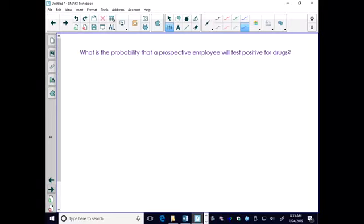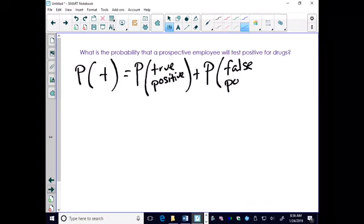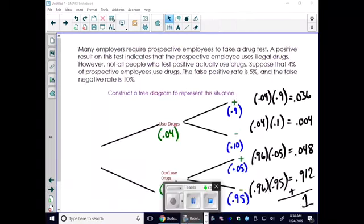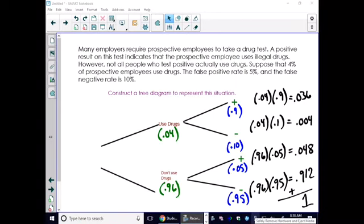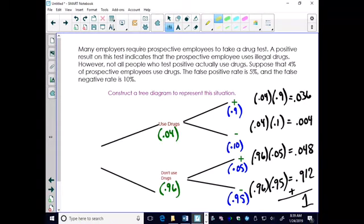Now let's look at a specific problem. What is the probability that a prospective employer will test positive for drugs? Now there's two ways this could happen. If you go back to your tree diagram, you'll see that you could have a true positive where you're using drugs and you test positive, or, remember or means to add, you don't use drugs and you still get a positive.